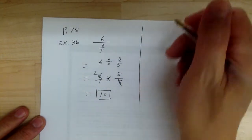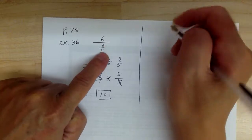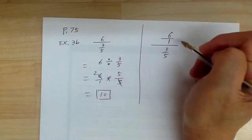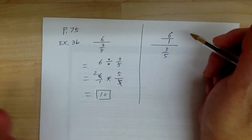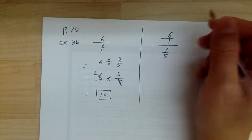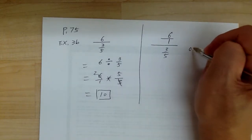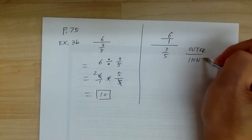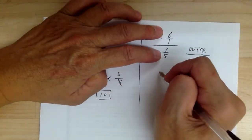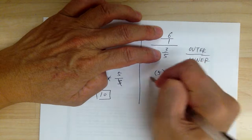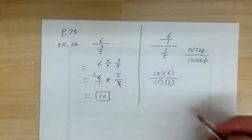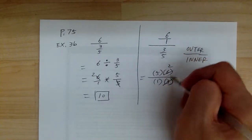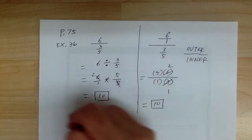Another way to do this is to make everything into fractions: 6 over 1 divided by 3 over 5. Remember 6 is 6 over 1, so you make everything into fractions. Then you can use the outer over inner method: outer gives you 5 times 6 on top, inner gives you 1 times 3 on the bottom. This cancels out and the answer is equal to 10. Either way you get the same answer, so you can do it whichever way you prefer.